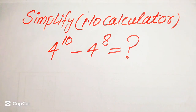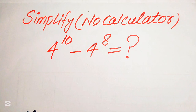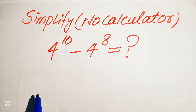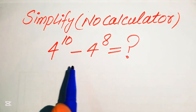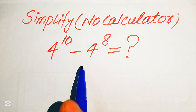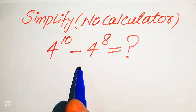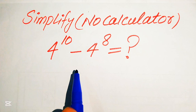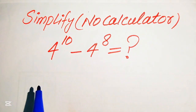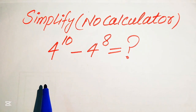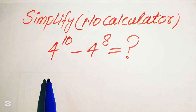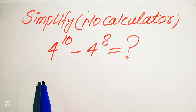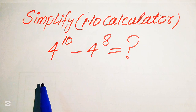Hello everyone, today I want to show you how to simplify this nice algebraic expression without using the calculator. If we have 4 to the power of 10 minus 4 to the power of 8, we write this algebraic expression into simplified form. Calculator not allowed means that we need to show all of the working on this paper. I hope you like this method — if you have any other method in mind, please don't hesitate to write it into the comment section.